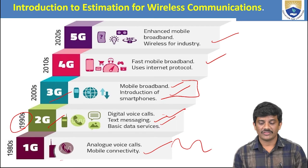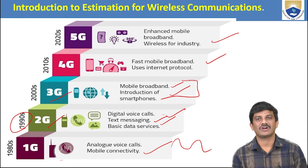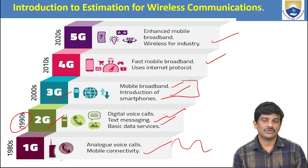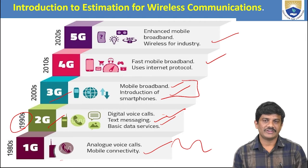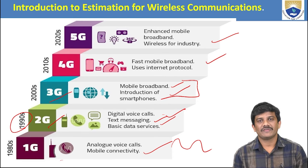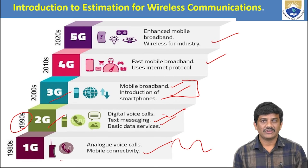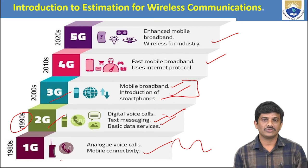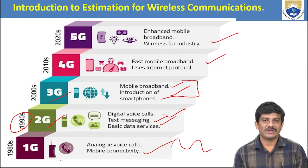In 4G, fast mobile broadband using internet protocol was introduced, enabling more internet functionalities. In 5G, we can use 360-degree connectivity with the whole world. These are the evolution milestones of the wireless communication system, reflecting improvements in wireless connectivity.